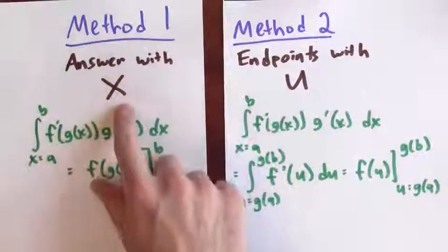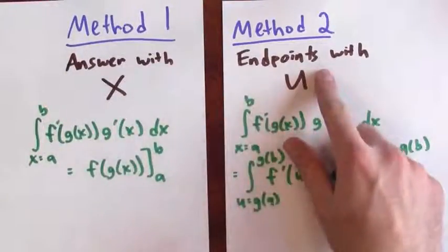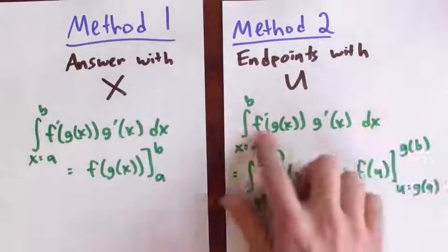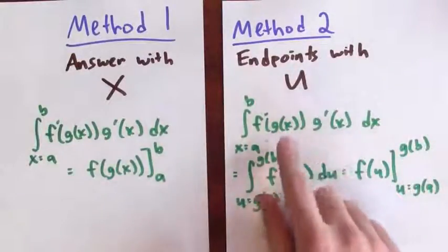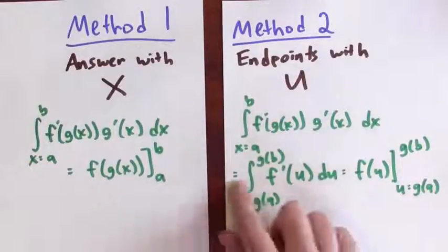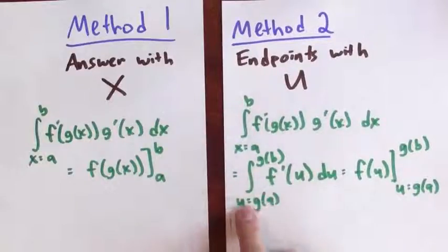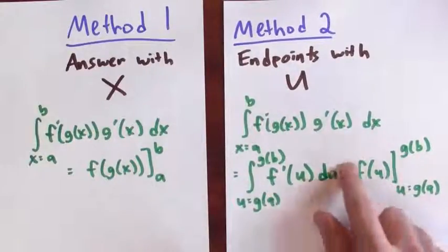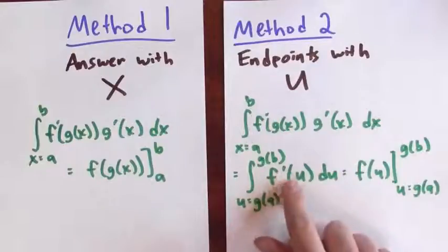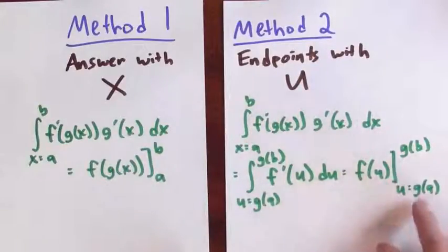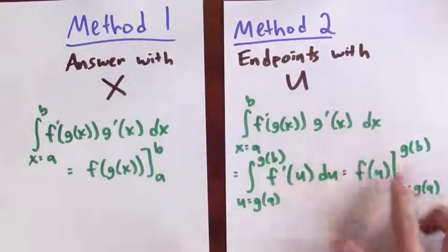In the second method, instead of finding the antiderivative in terms of x, I changed the endpoints to make the endpoints be in terms of u. So I took this original problem, and after making the substitution u equals g of x, then I rewrote the endpoints to go from g of a to g of b in terms of u. And then I found an antiderivative of f prime u du, so now f of u, and I evaluated that at g of b and g of a and took the difference.